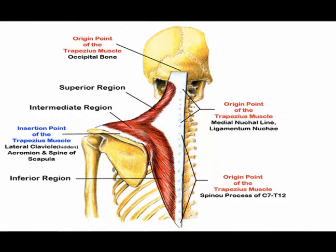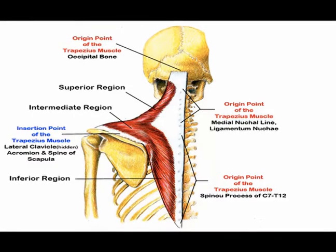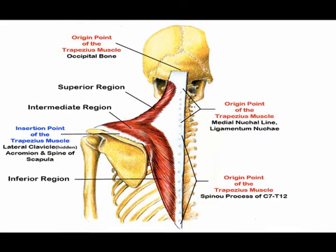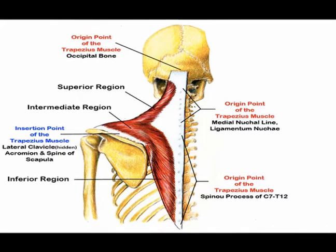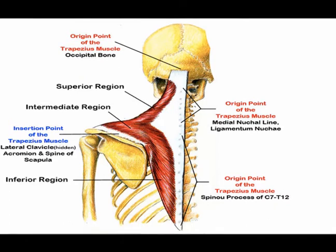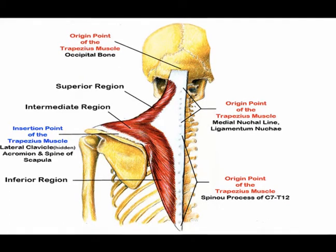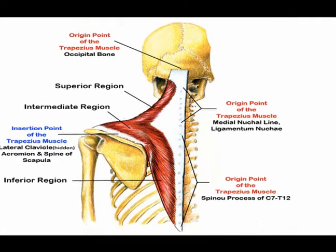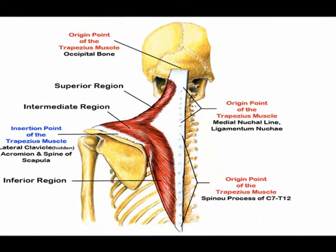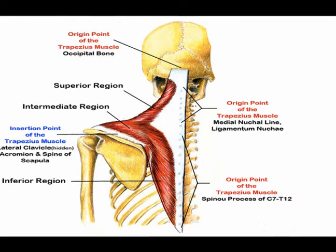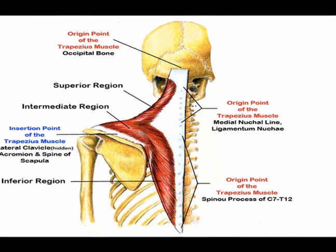The origin of the medial part of the trapezius muscle is spinous process T1 through T5, and the origin of the lower part of the trapezius muscle is spinous process T6 through T12.